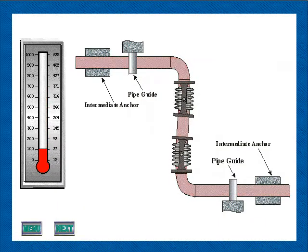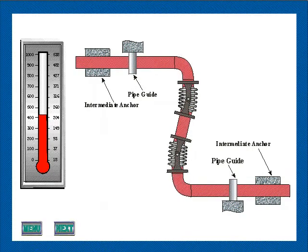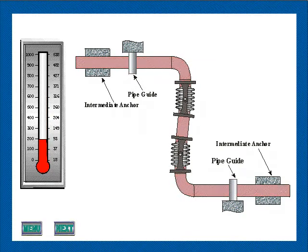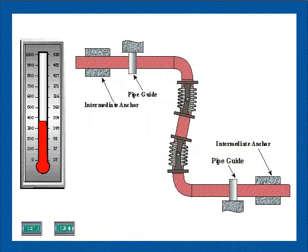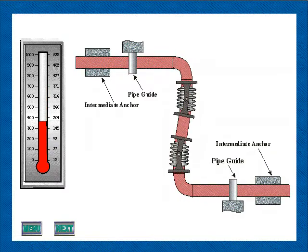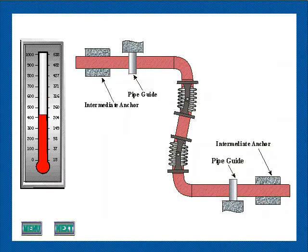This animation illustrates the use of a two hinge system to absorb the major thermal expansions in a single plane z-bend. Since the pressure thrust is absorbed by the hinges on the expansion joints, only intermediate anchors are required at each end of the piping system.